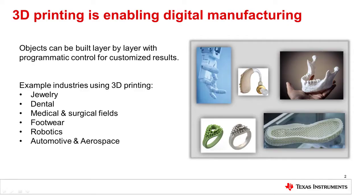3D printing builds an object by depositing material one layer at a time. This method of production allows designers and manufacturers to speed up development cycles, make quick adjustments to molds and prototypes, and create highly detailed and customized parts. The 3D printing industry is expanding beyond rapid prototyping and into additive manufacturing to produce final products with features that often cannot be produced using traditional manufacturing techniques.